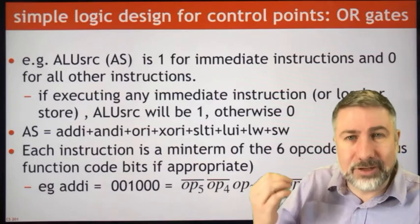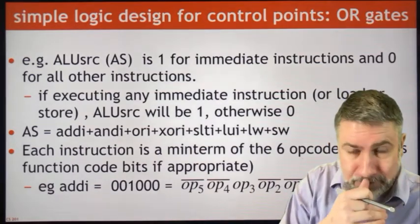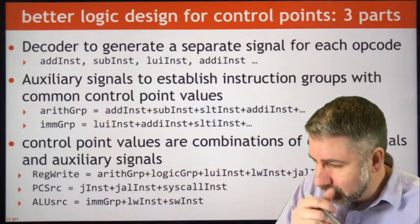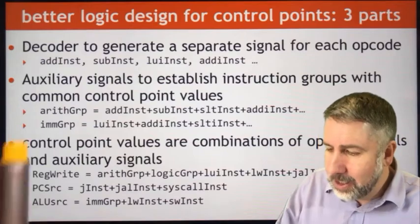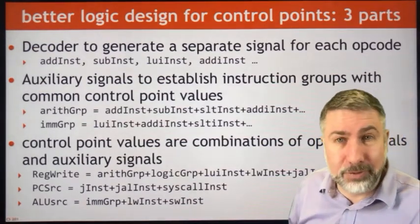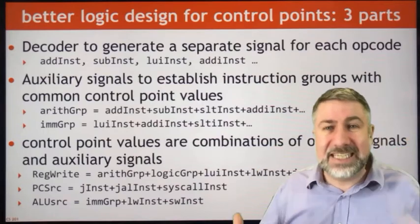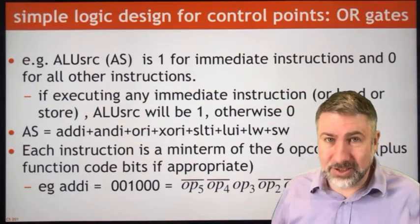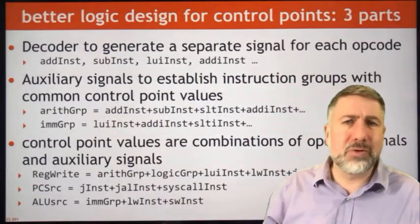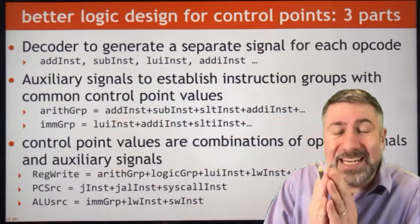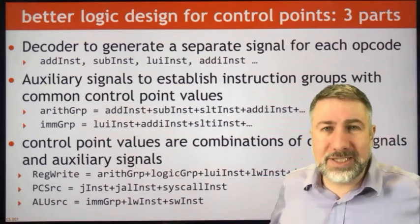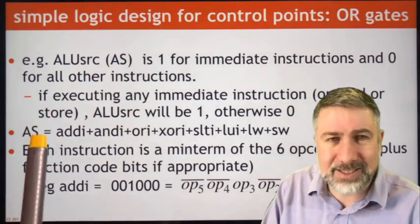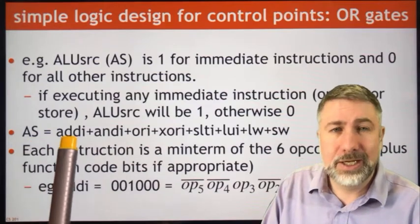This is an example of the kind of logic design used to create the logical functions for all control points to give full hardware functionality. We'll build all that hardware using a decoder first to generate a separate signal for each opcode. This is big and complex, but it gives us a single-bit signal for every opcode so we don't have to compute a six-bit minterm every time. We know we'll need all of these six-bit minterms, so we just generate them all using a decoder.